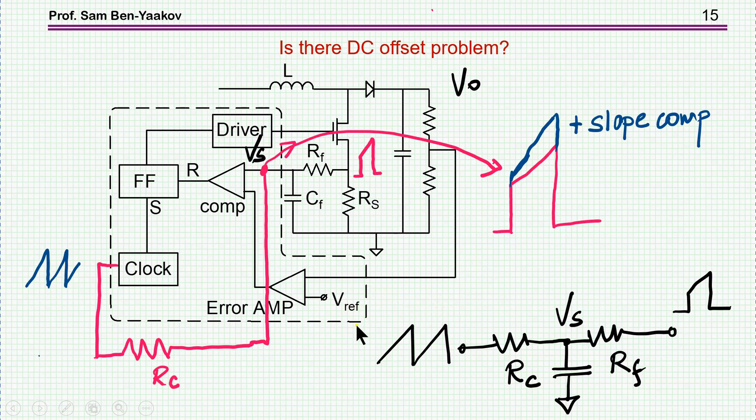This is a peak current mode controller. This is a generic description of it—this is the controller, and this is the stage. We are measuring the current here, and when the current comes to a certain level, a peak level, which is compared to this voltage, it'll turn off the gate. So the gate is turned on until this current goes to a level which is determined by the output here, and then it'll turn off.